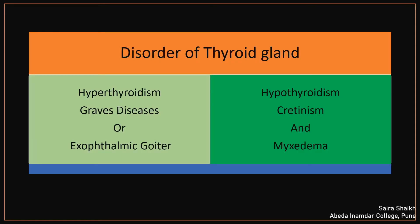Let us see what disorders are produced if the thyroid gland is not functioning normally. If the thyroxine level is increased above normal due to hyperactivity of the thyroid gland, the condition is called hyperthyroidism. The other condition, hypothyroidism, is where the thyroxine level in the blood is low. Under hypothyroidism we have two disorders: cretinism and myxedema. Under hyperthyroidism the disorder is called Graves disease.